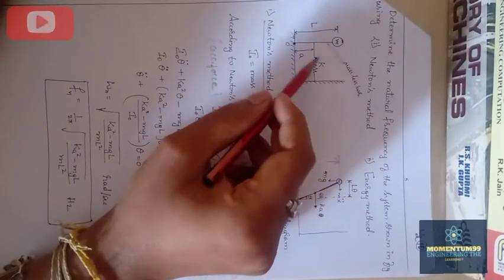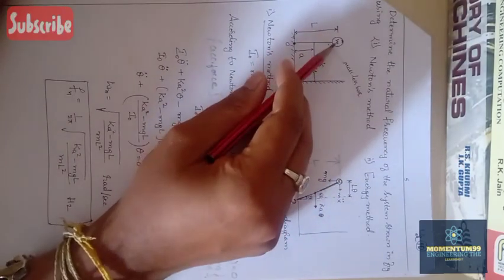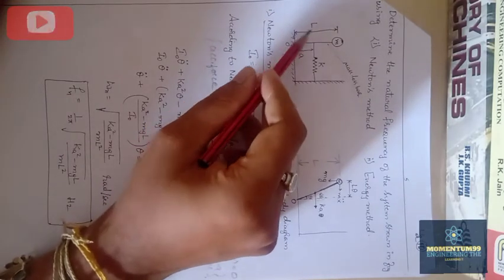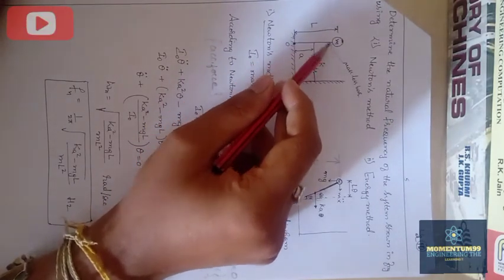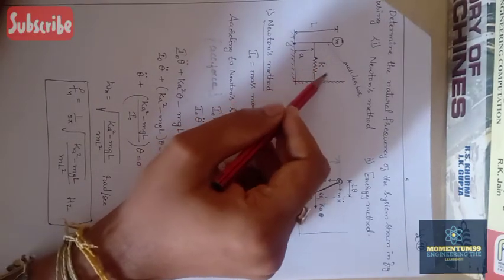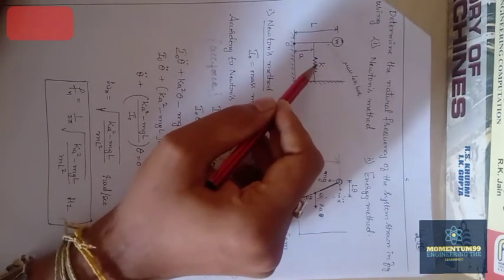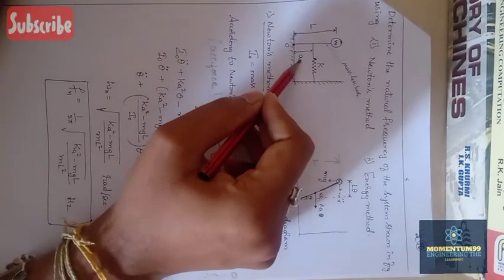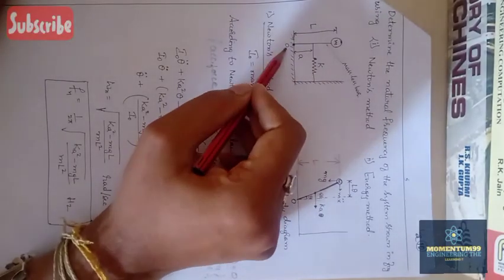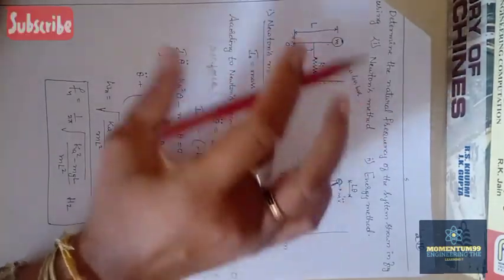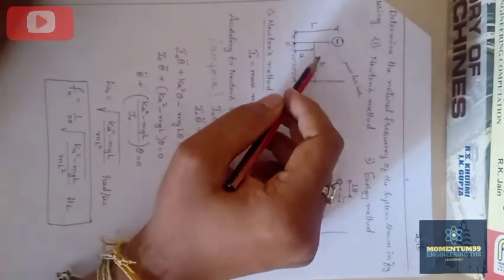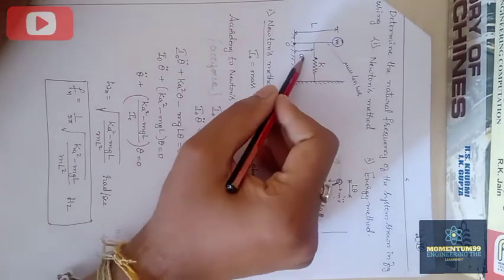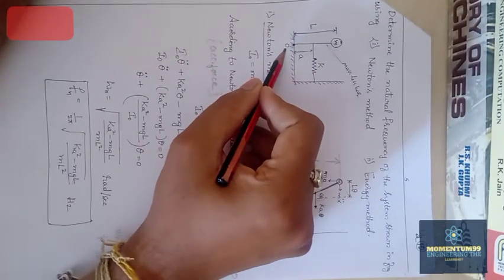Let's look at the diagram. We have a mass m suspended from point O at a distance l. Apart from the mass, we have another element — a spring having stiffness k. The spring is fixed at a distance a from the point of suspension O. So the mass is at distance l from O, and the spring is at distance a from O.